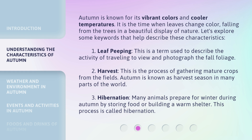1. Leaf Peeping: This is a term used to describe the activity of traveling to view and photograph the fall foliage. 2. Harvest: This is the process of gathering mature crops from the fields. Autumn is known as harvest season in many parts of the world. 3. Hibernation: Many animals prepare for winter during autumn by storing food or building a warm shelter. This process is called hibernation.